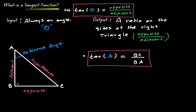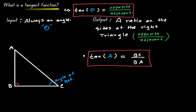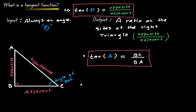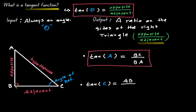Now let's change our angle of reference. Let's make C our angle of reference and label our triangle. Opposite of 90 degrees — that's the hypotenuse. The side that is opposite to the angle of reference — that's our opposite. And the side that is next to our angle — that's our adjacent. So from the perspective of angle C, our opposite is line segment AB, which is the numerator of our ratio, and our adjacent is line segment BC, which is the denominator of our ratio.